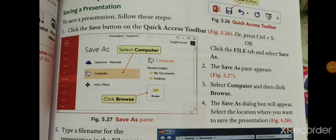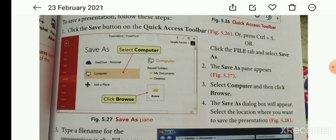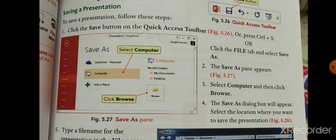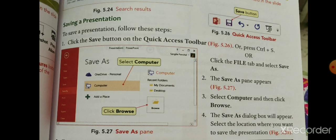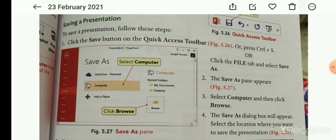To save a presentation, follow these steps. First, click the Save button on the Quick Access Toolbar — जैसा figure 5.26 में दिख रहा है। या फिर keyboard से Control+S press करेंगे तो भी आपका document save हो जाएगा।